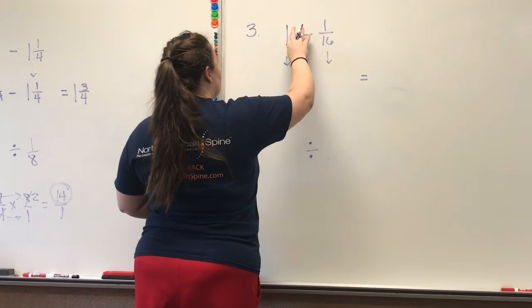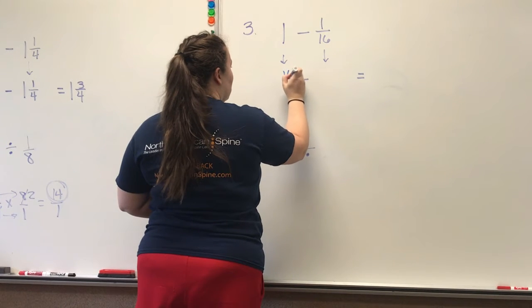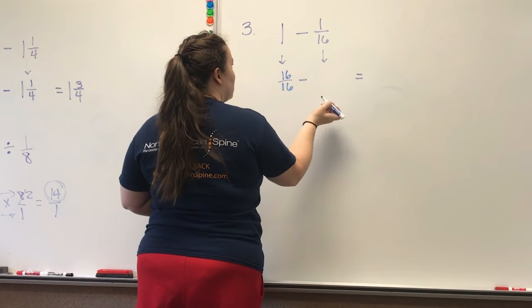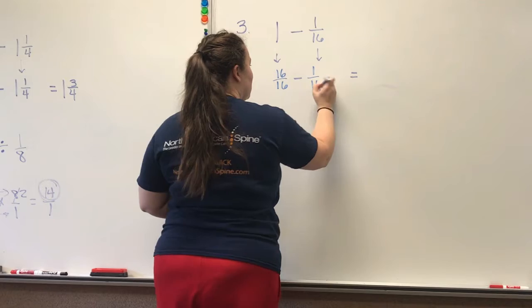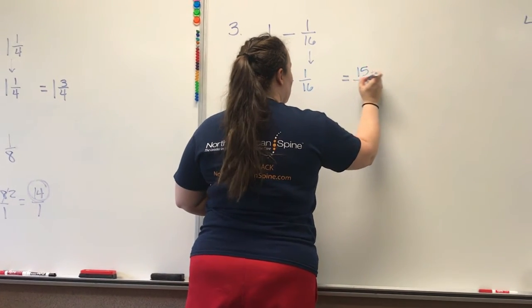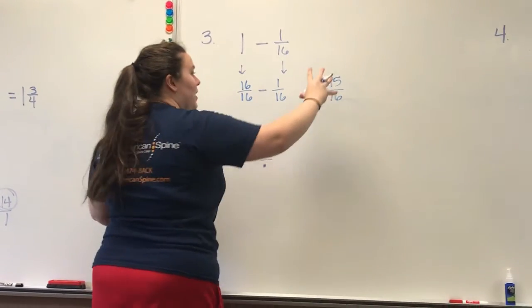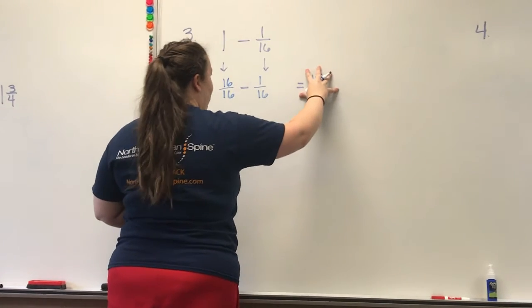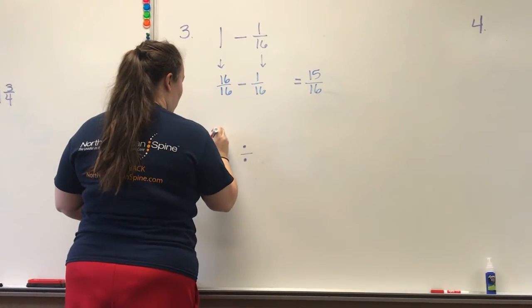I'm just going to turn this into a fraction. I'm going to do 16 over 16 minus one over 16. And I get 15 over 16. Okay. This is my total. This is what I have. This is the first number of our division problem.